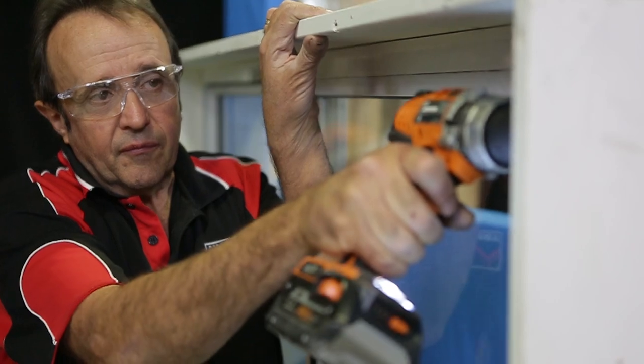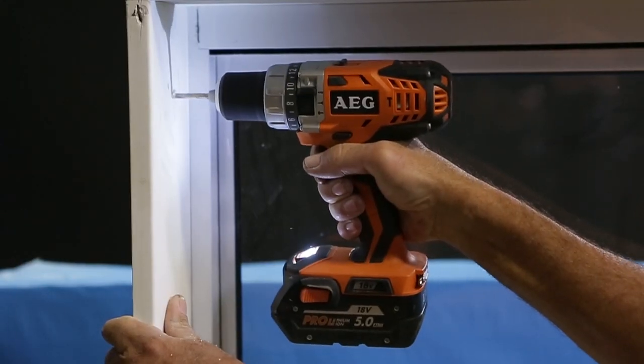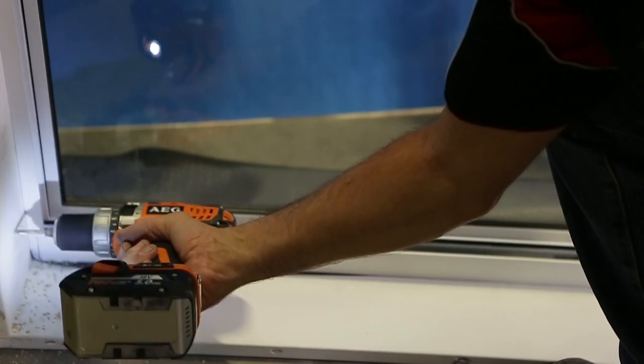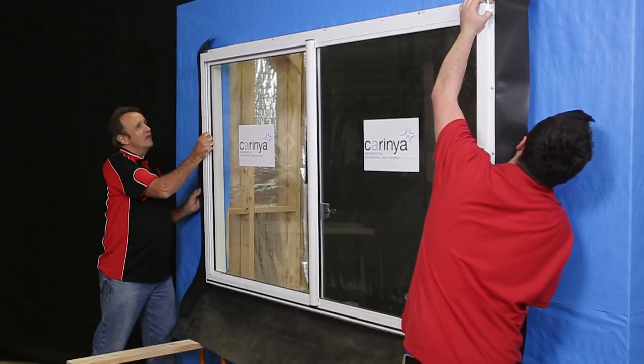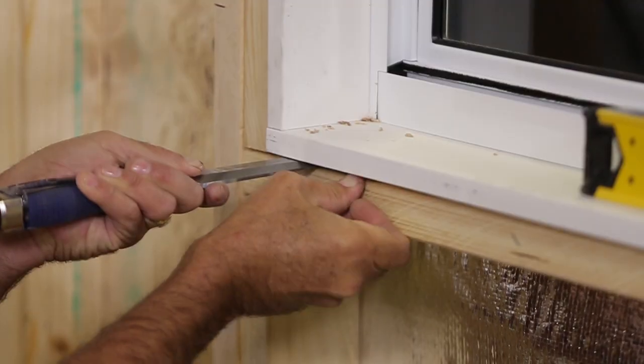Pre-drill the window reveal for the fixing screws. Position the window roughly in the center of the opening and level the sill using packers.